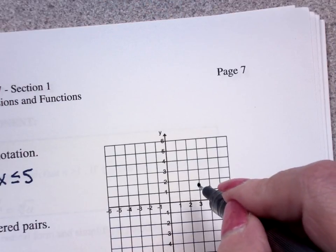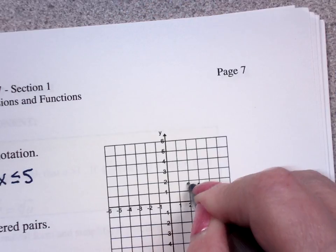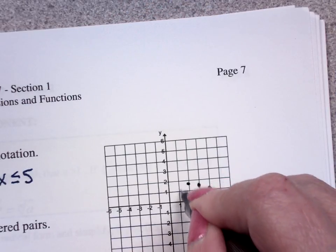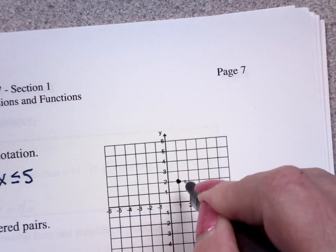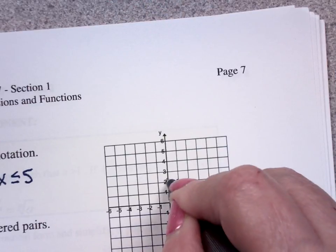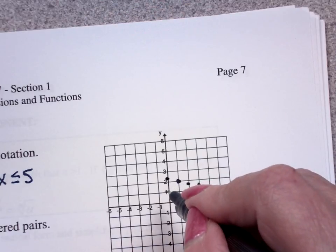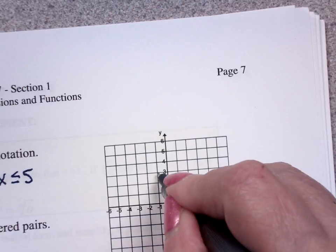x equals 2, y equals about 1 and 3 quarters. x equals 1, y equals 2. x equals 0, y equals 2.2. It's about 2 and a third. y equals negative 1. I'm about 2 and a half.